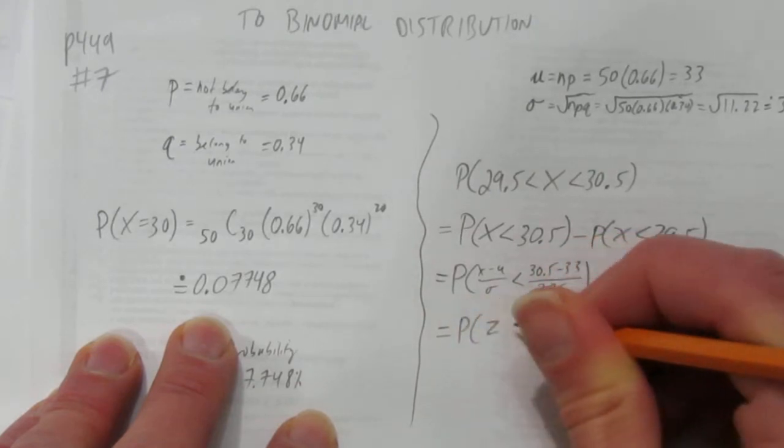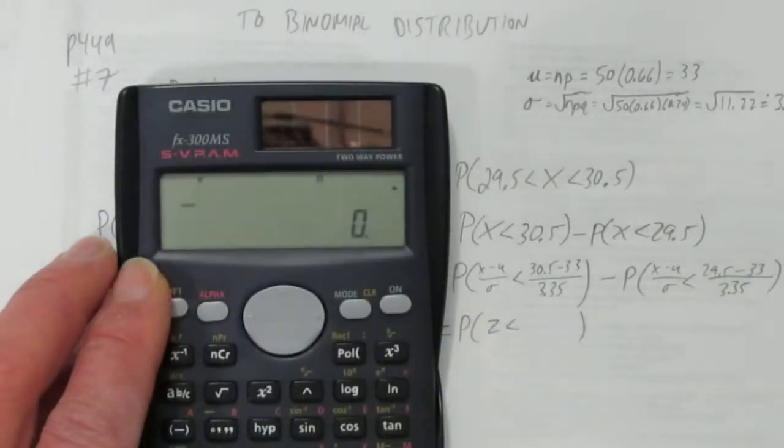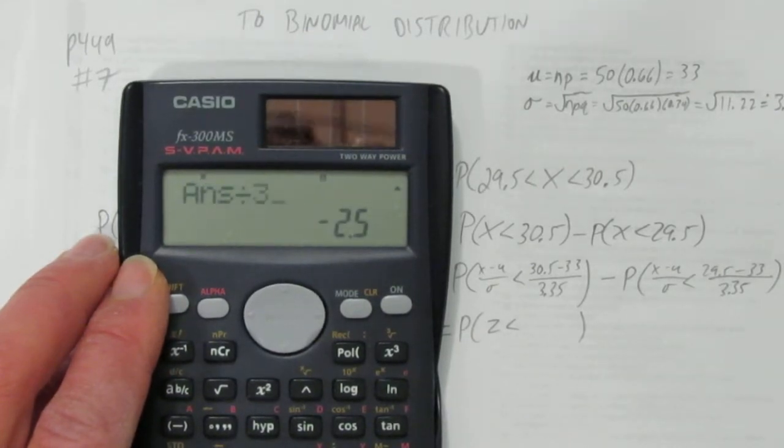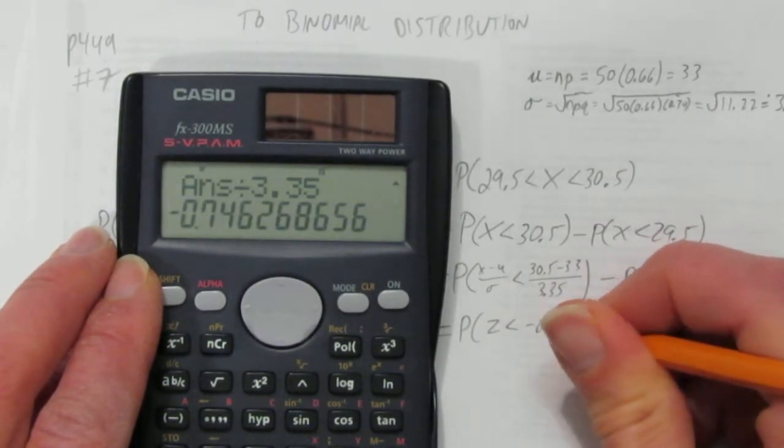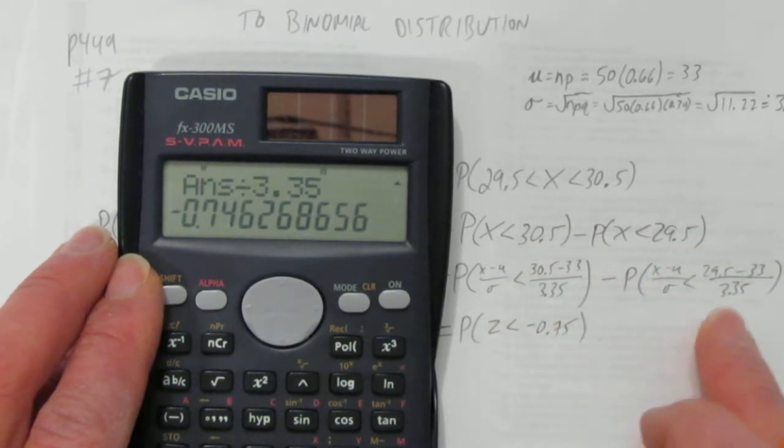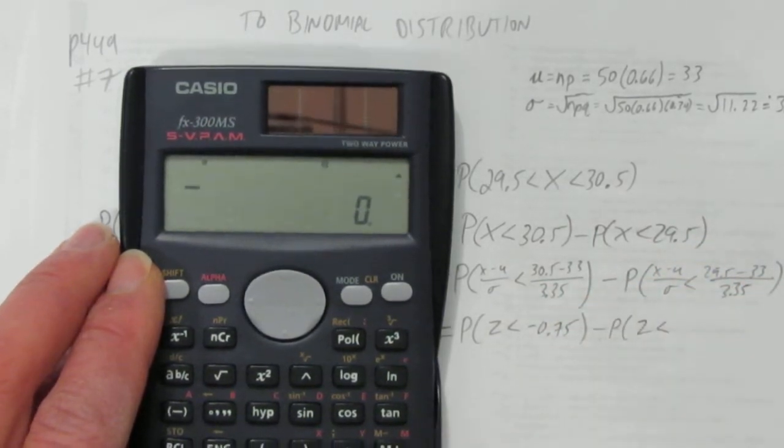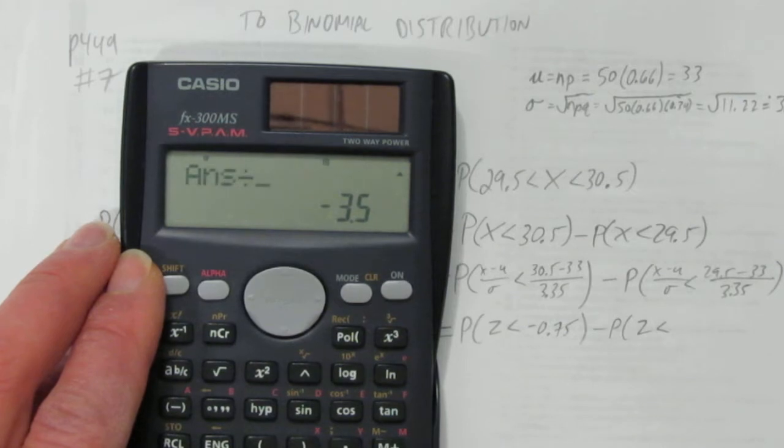Take away the probability of X minus mu over sigma. So that's 29.5 minus 33 over 3.35. So that's the probability that our z-score less than. We got to go 30.5 minus 33 divided by 3.35. We get z of round to two decimals.